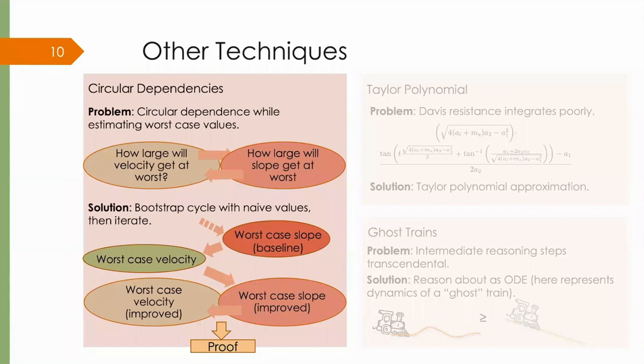The solution is to bootstrap with a naive, conservative value and iteratively derive improved estimates. This controller design technique produces its own proof. Each iteration corresponds to a fixed number of proof steps.